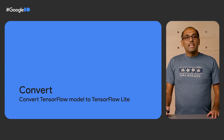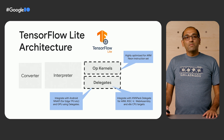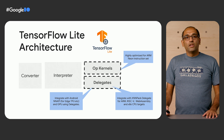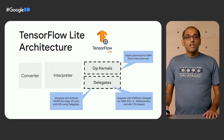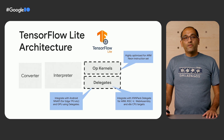Before diving into model conversion, let's help Sam understand the TensorFlow Lite architecture and how to leverage it. Sam's first step is to convert a TensorFlow saved model or Keras model to the TensorFlow Lite format using the TensorFlow Lite converter. Sam's new model needs to run on CPUs, which are available on all mobile devices. The TensorFlow Lite interpreter calls into highly optimized CPU kernels for performance. Additionally, TensorFlow Lite delegates allow part or the entire graph to be executed on accelerators such as the GPU for potential performance gains.